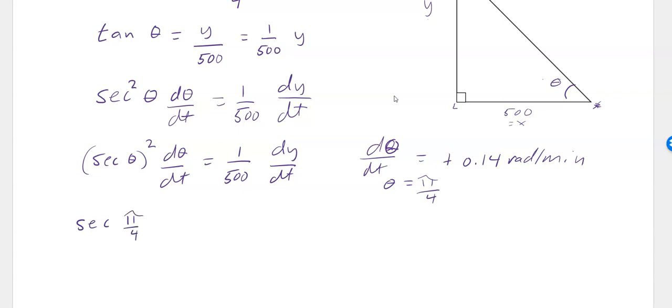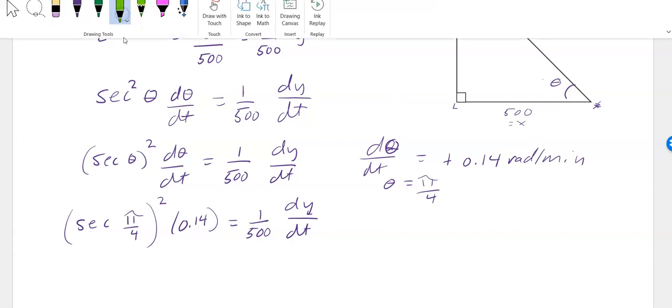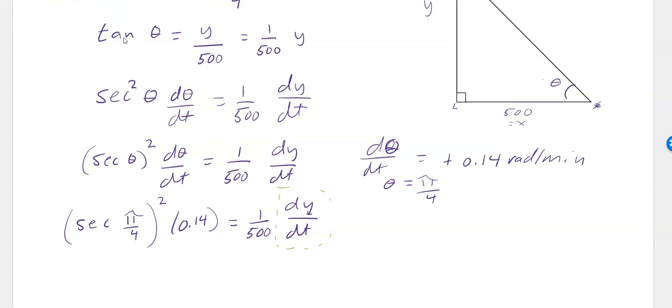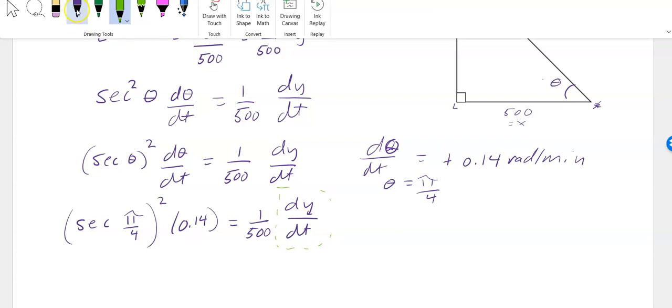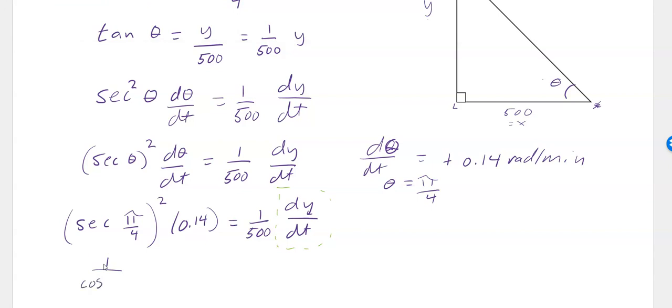The secant of π/4 squared times 0.14 equals 1 over 500 dy/dt. They asked me to find how fast is the balloon rising, and that's dy/dt. I have everything I need except for this unknown that I'm supposed to find, and I have everything else, so I can solve this equation.